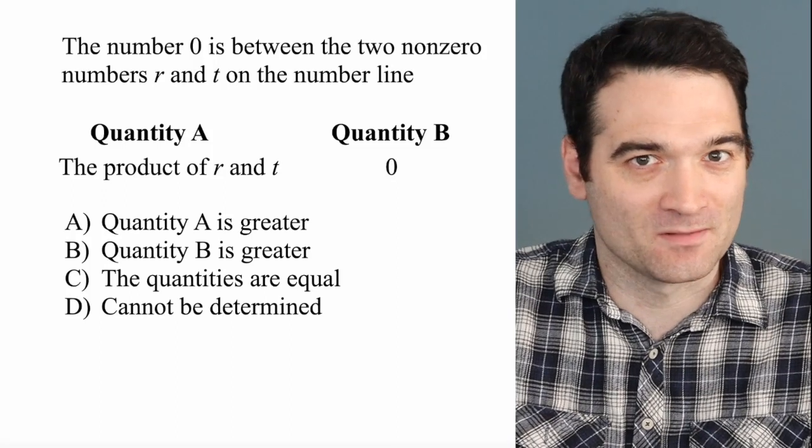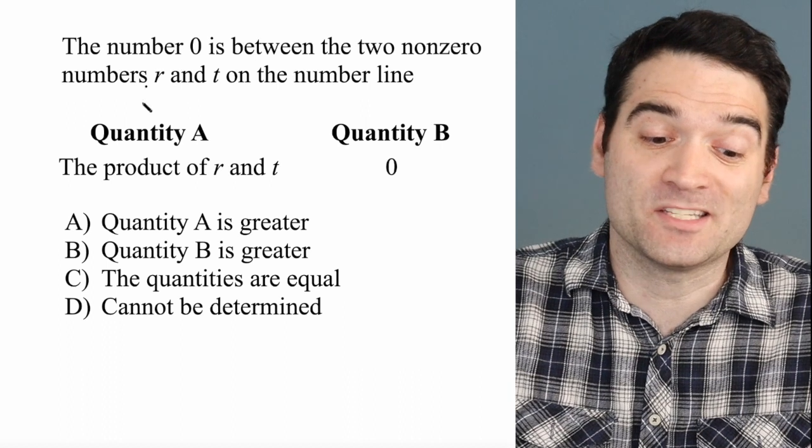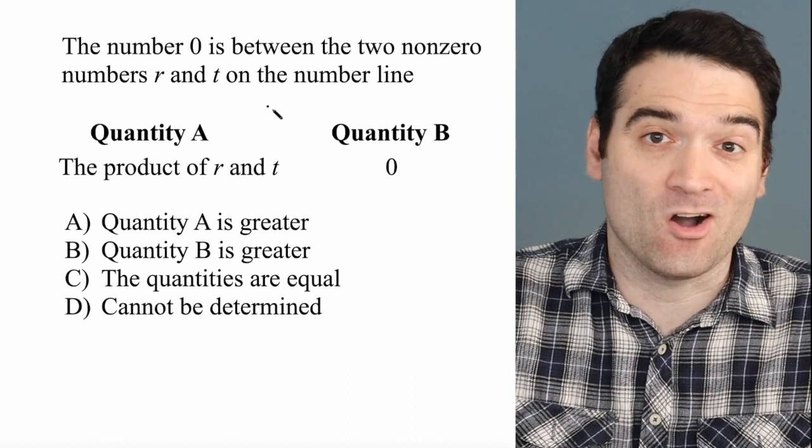Here's a GRE algebra question. Let's take a look. The number 0 is between the two non-zero numbers R and T on the number line.